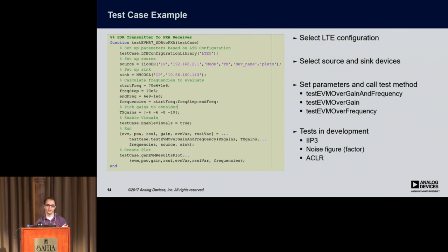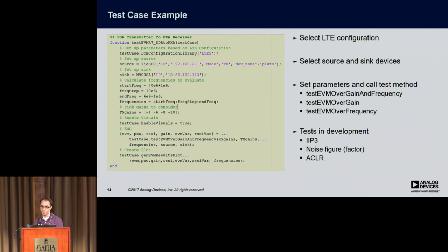Test cases are super easy to write. You select an LTE configuration — all of these are based on downlink right now, but we'll be adding uplink testing soon — and you select your source and sinks, so an SDR or a piece of equipment. Here we have a Pluto device and a PXA from Agilent, sweeping over frequency. The tests we're looking at here are EVM, but there are a lot of knobs to turn: gain, frequency, and we're adding IP3, noise figure, and ACLR-type testing as well.